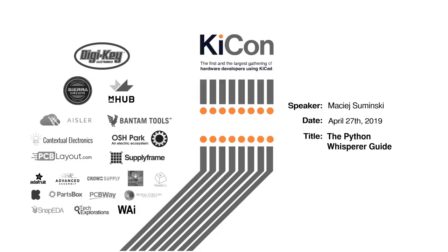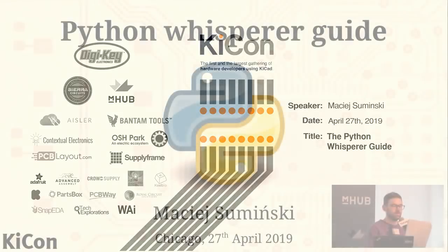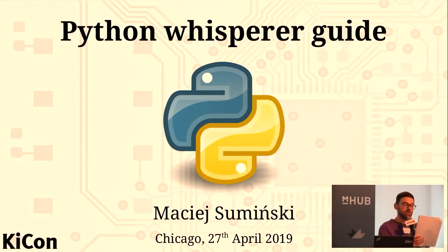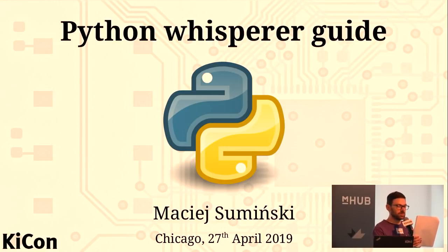Next up we have Maji Suminski giving a talk called Python, the Whisperer Guide. Maji, widely known as Orson, has been passionate about competing since childhood. During the day he works as a C++ programmer at CERN, but his nights are spent harnessing electrons. He strongly supports both open source and open hardware initiatives, which made him join the KiCad developers team in 2013. Since then he has been regularly contributing to the project, perpetually striving to improve KiCad. Please welcome him to the stage.